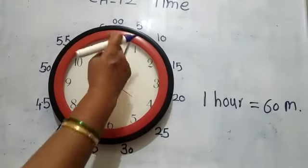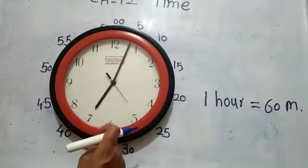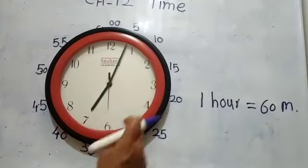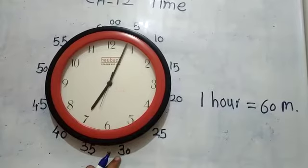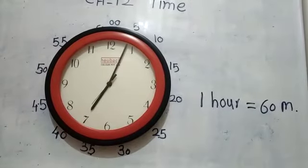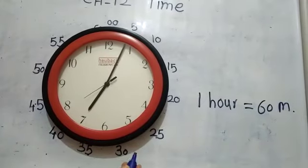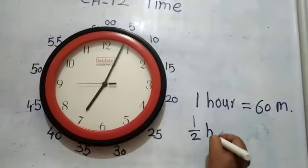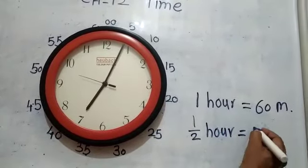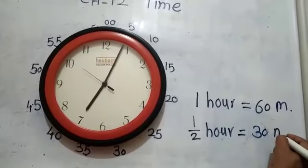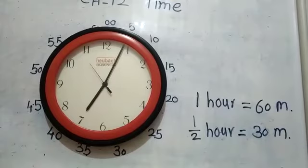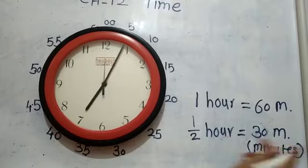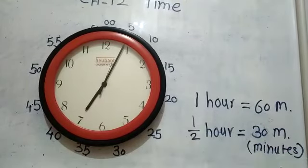Now tell me: if we start from 12 and reach to 6 — look, half an hour is equal to 30 minutes. Look here children — when the minute hand makes a half round and reaches at 6, and the hour hand is in between seven and eight, the time is past the previous number.